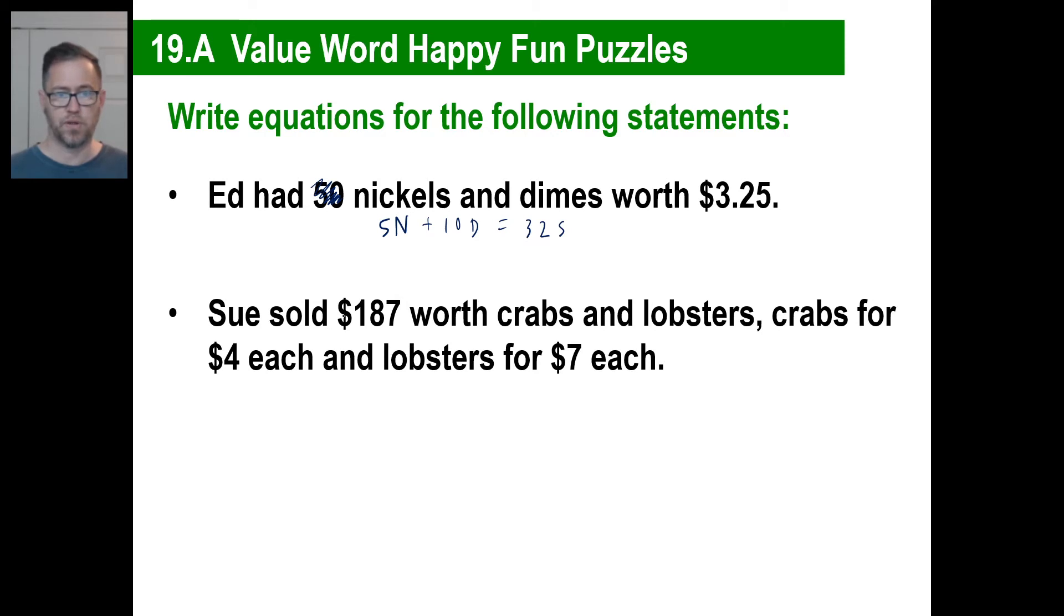Let's say Sue sold $187 worth of crabs and lobsters. Crabs were $4 each and lobsters were $7 each. You'd sit there and go, oh boy, I don't know how to... Well, let's say crabs are $4 each. That's four times crab plus seven times lobster. She sold that much total. That'll be $187 total.